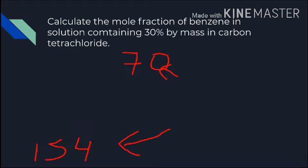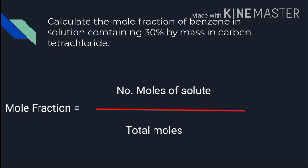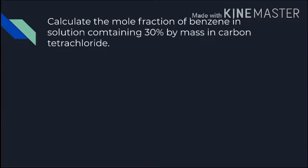Now put these into the mole fraction formula. Mole fraction of benzene = number of moles of benzene / (number of moles of benzene + number of moles of CCl₄). Solve this to get the answer. Note: we were not asked for the mole fraction of carbon tetrachloride, so we won't calculate it separately. If needed, it can be obtained from the benzene mole fraction using the basic formula.